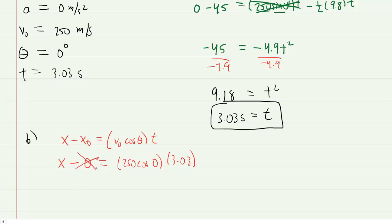This 0 can be disregarded. You can go ahead and type in the information on the right-hand side. When you do so, you will get about 758. That's the final x-coordinate of the projectile, and that is the distance that it travels horizontally. So that's the correct answer for part B.